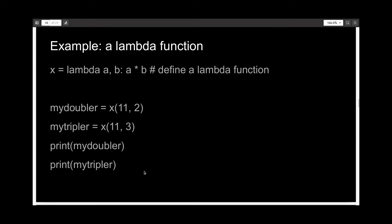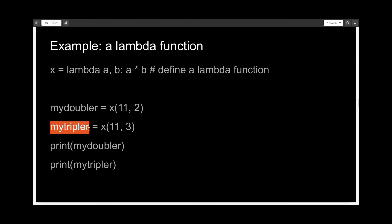But if you simply use a Lambda function with two arguments A and B, multiplying those two to return the result and store it in variable X, and initialize mydoubler and mytripler with the values x(11, 2) and x(11, 3), this will actually do the same thing, but as you can see, this is a much smaller program with Lambda functions.